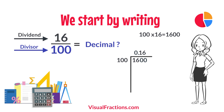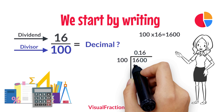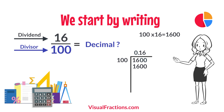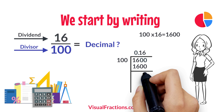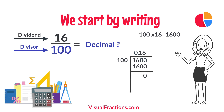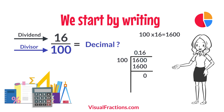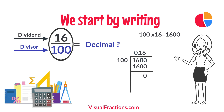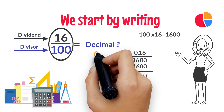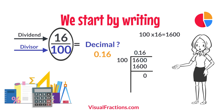Multiplying 16 by 100 gives us 1600. When we subtract 1600 from 1600, we get a remainder of 0. So, there we have it. The fraction 16 one-hundredths converted to a decimal is 0.16.